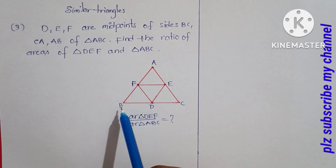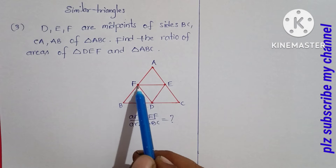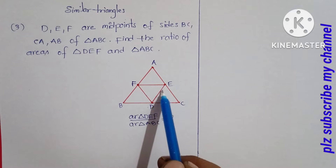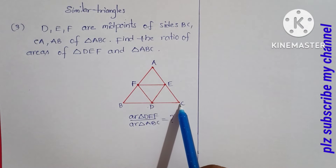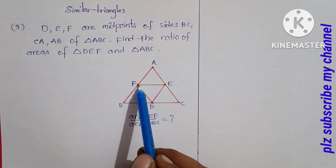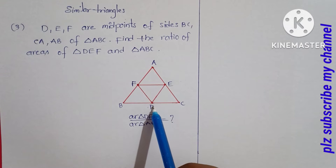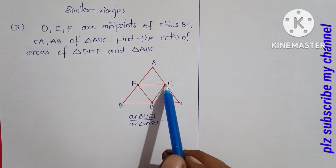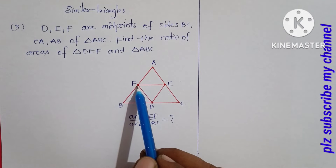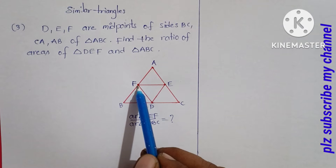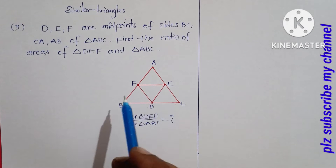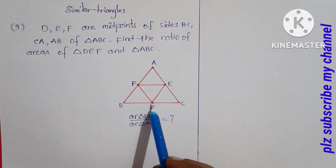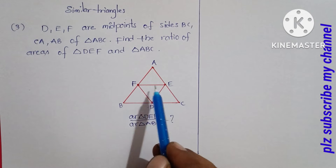Here we can identify three parallelograms: BDEF is one parallelogram, DCEF is another parallelogram, and DEAF is a third parallelogram.